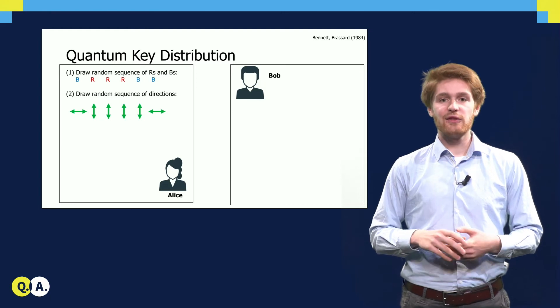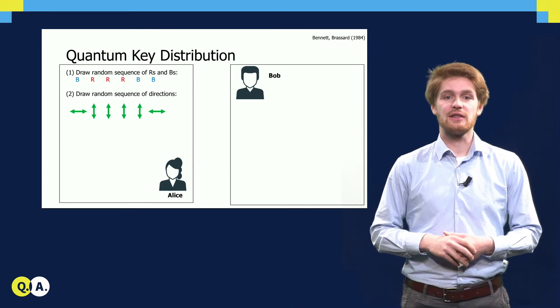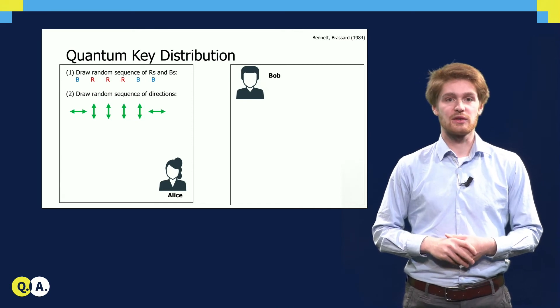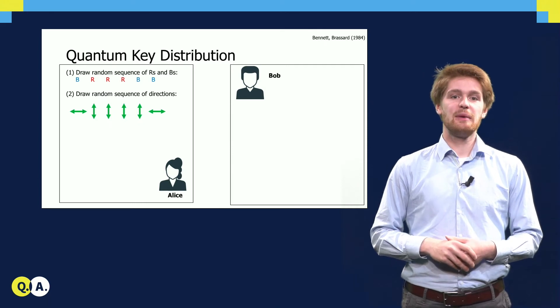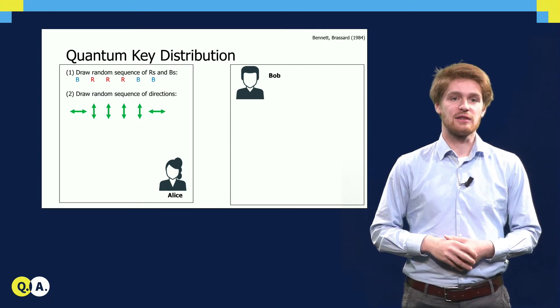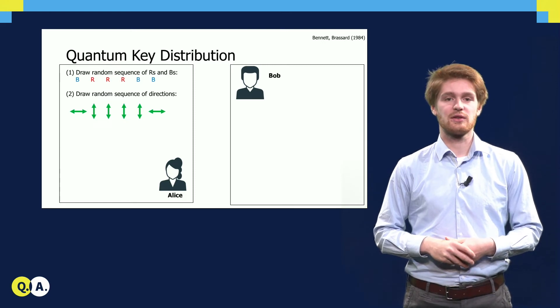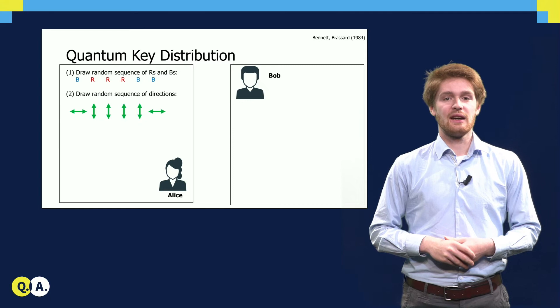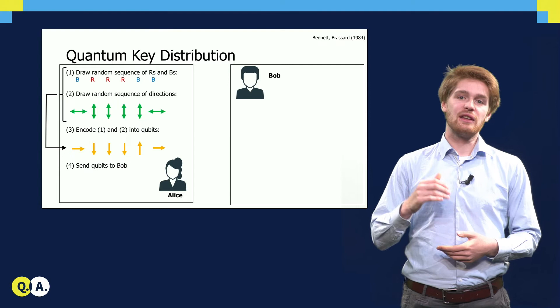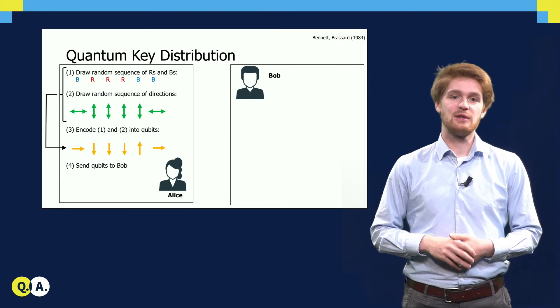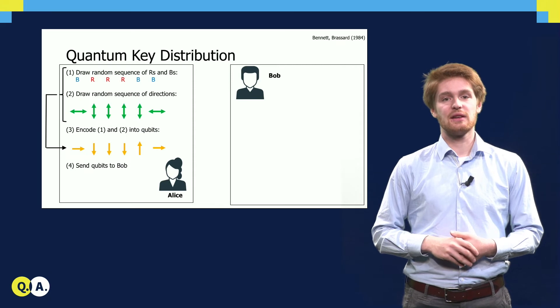The BB84 protocol starts by Alice picking a random sequence of bits, which you have written here as R's and B's instead of 0's and 1's. These are reds and blues. On top of this, she picks a different random sequence of directions, here depicted as vertical and horizontal instead of 0's and 1's. In the third step, she encodes this information into single qubit states. In a fashion that is compatible with the measurement basis we saw before, she encodes the two sequences bitwise as arrows.